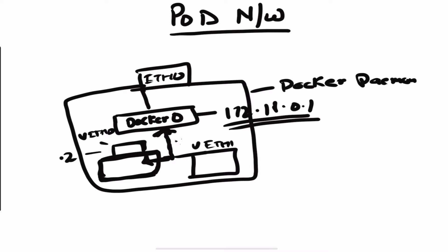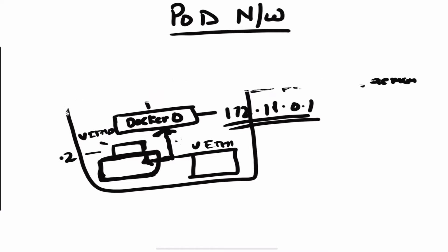But in Kubernetes, when you run a pod, all the containers running inside a pod actually share the network namespace. So they can access each other on localhost. How does that happen? Let me get rid of this and explain.